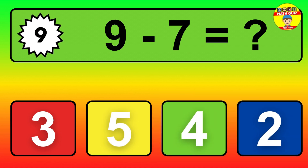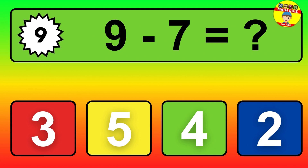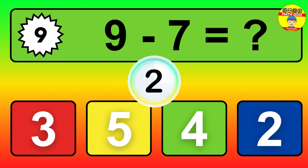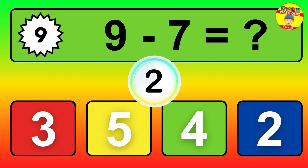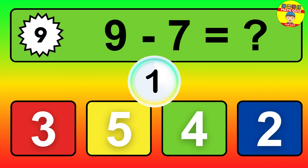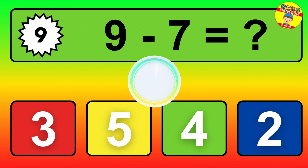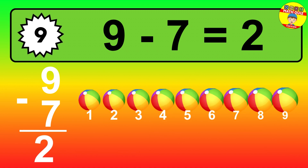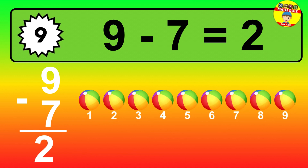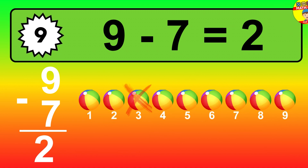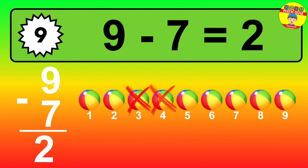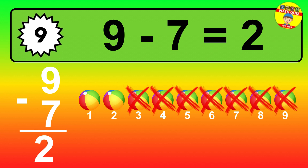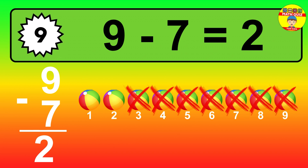Question 9. 9 minus 7 equals what? So the answer is 9 minus 7 is 2. Let's count it. 1, 2.